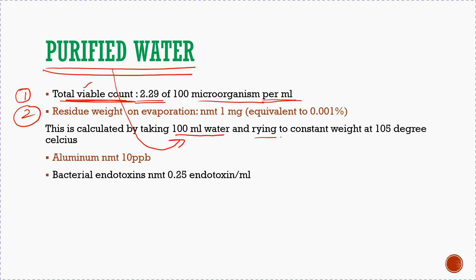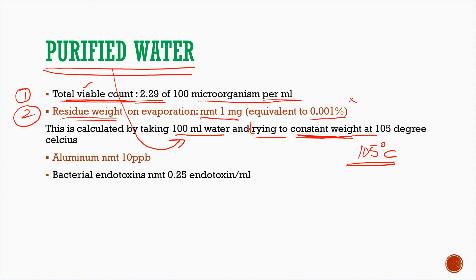We will dry it — heat it at 105 degrees Celsius until we get constant weight. After evaporation, the residual amount should not be more than 1 mg from 100 ml of water. So the residual weight on evaporation must not exceed 1 mg.